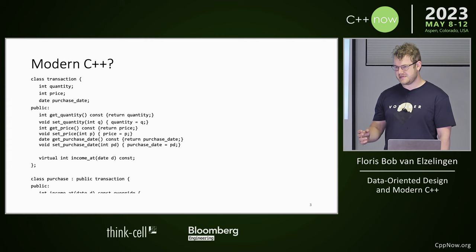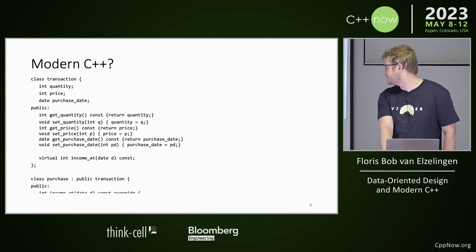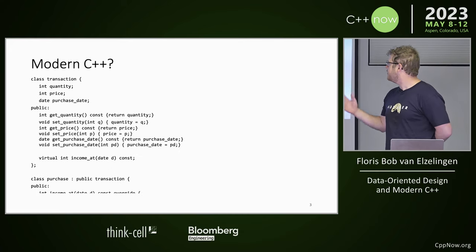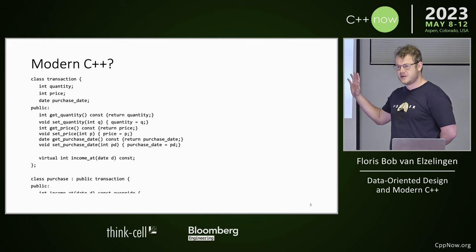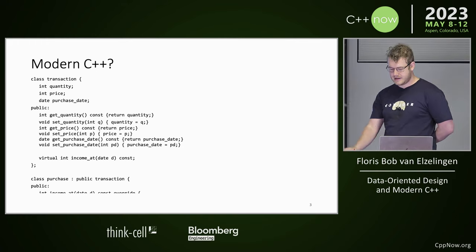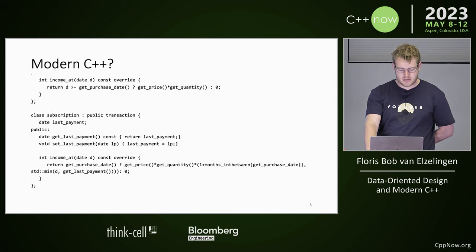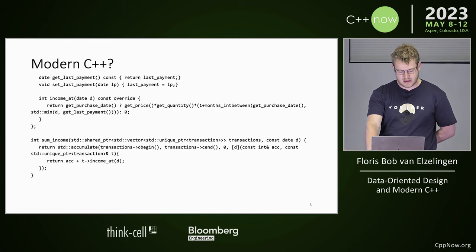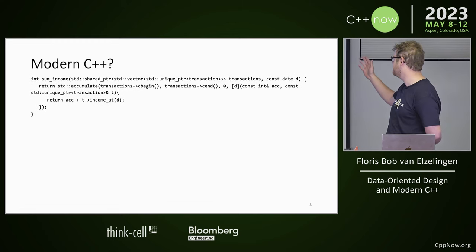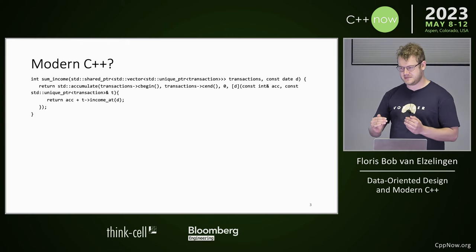Let's take a look at some modern C++. We have a lot of getters and setters even though we're not having any invariants. You see a virtual over there. We're doing a whole lot of inheritance, overrides. We have a beautiful function signature: shared pointer to vector to unique pointer to transaction. So everything works and everything's safe. I don't think this is modern C++.